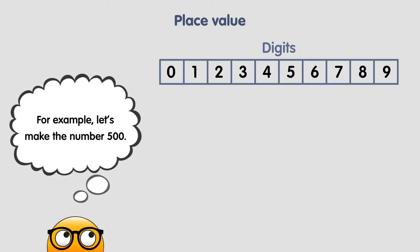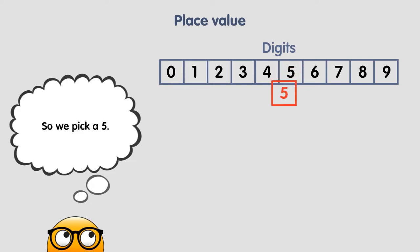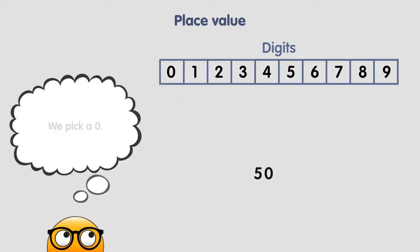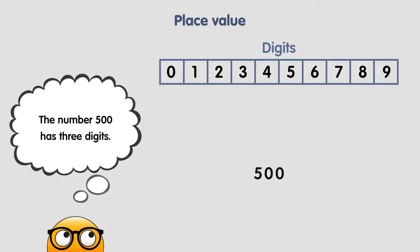For example, let's make the number 500. So we pick a 5, a 0, and another 0. The number 500 has 3 digits: 1, 2, and 3.